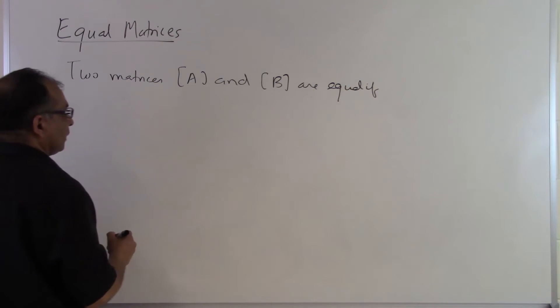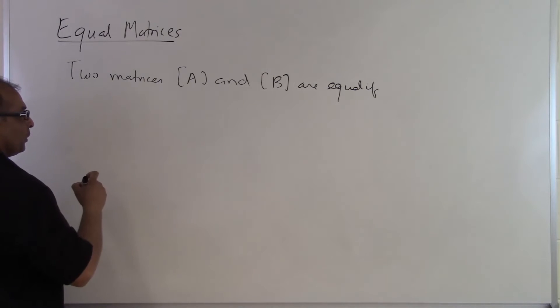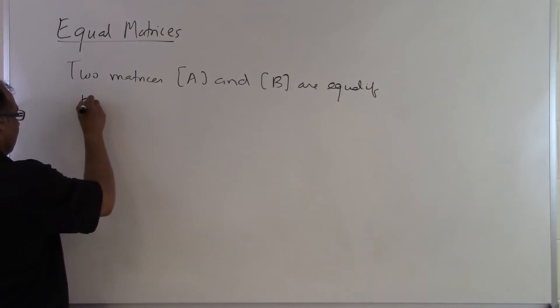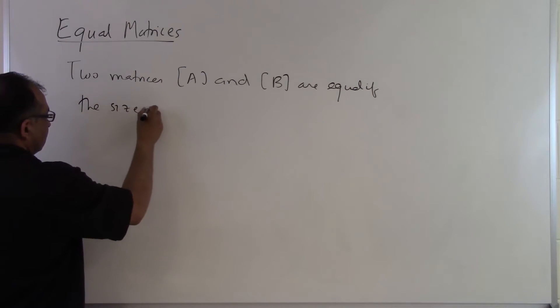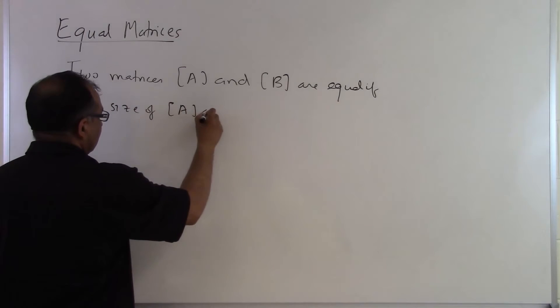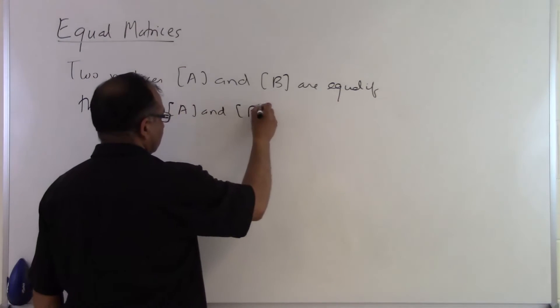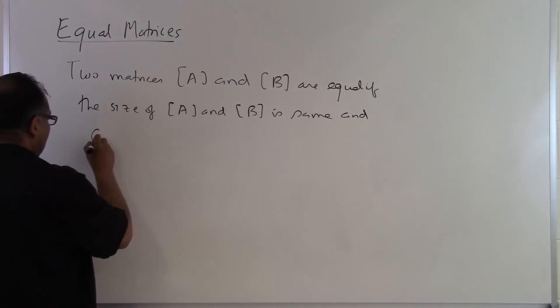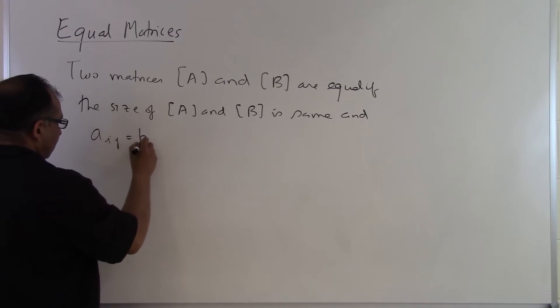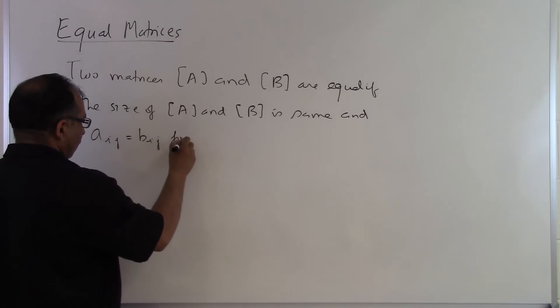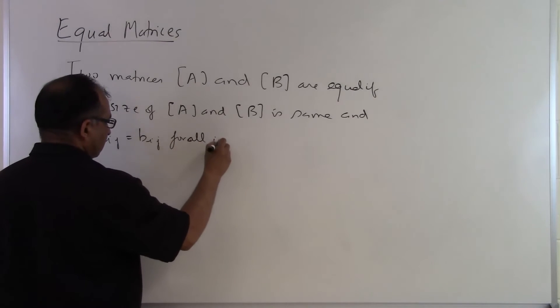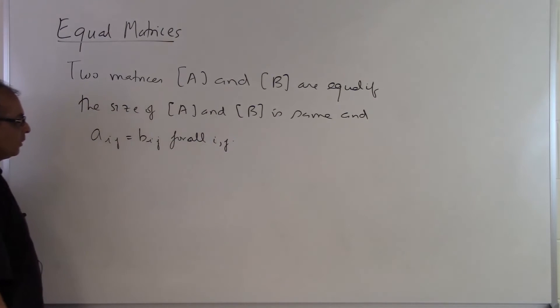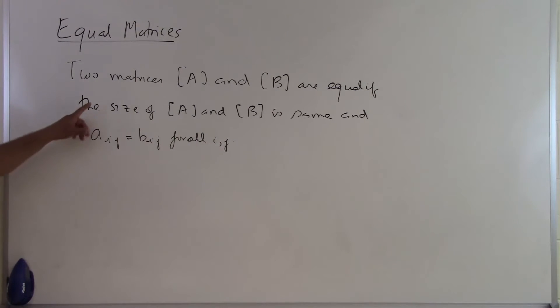So two things have to be considered when you consider two matrices to be equal. That if the size of A and B is same and Aij is equal to Bij for all i,j.